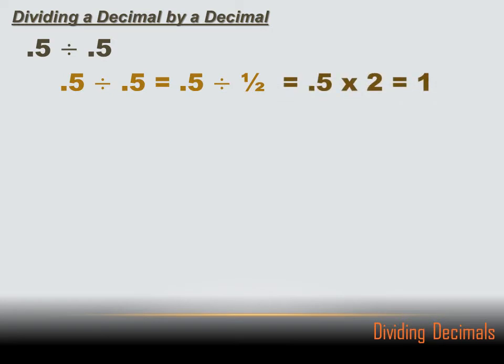Then, I could change point five divided by one-half to point five times two because dividing by a fraction is the same thing as multiplying by its reciprocal. So point five times two equals one. Half of two equals one. So point five divided by point five equals one.